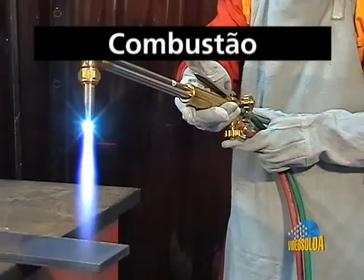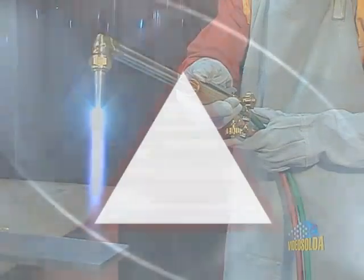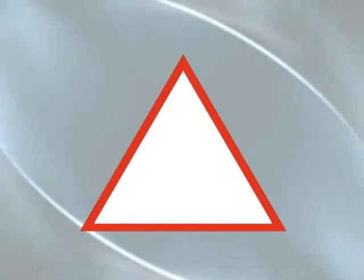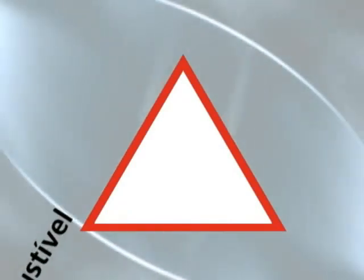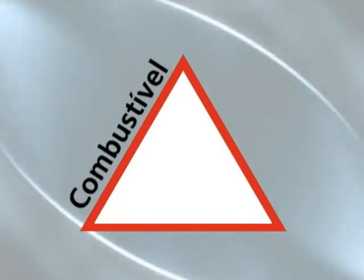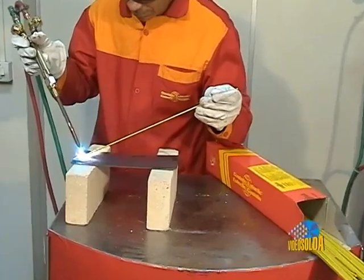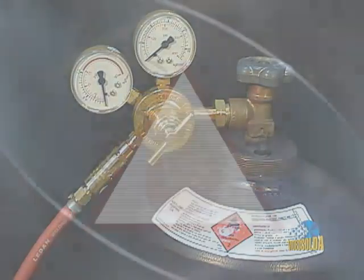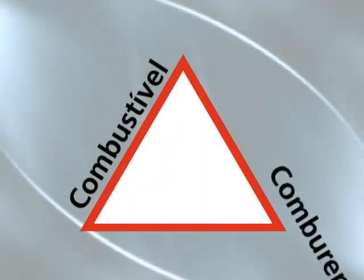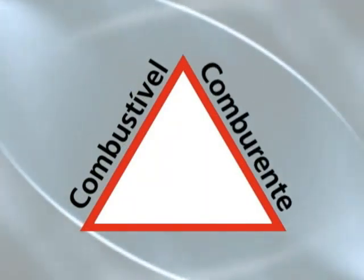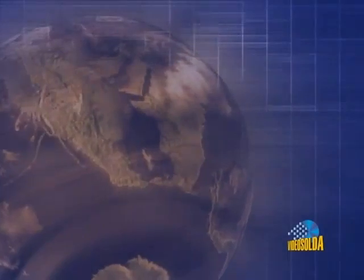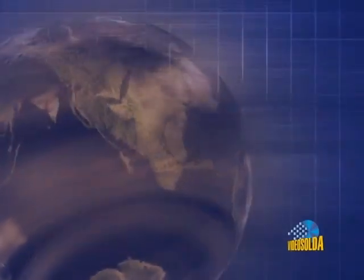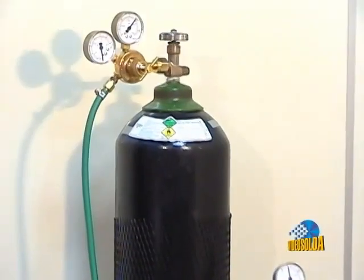Para uma combustão, é necessário reunir os três elementos que compõem o triângulo do fogo. O primeiro elemento é o combustível. Na soldagem, o gás normalmente utilizado é o acetileno. O segundo elemento é o comburente. No processo de solda e corte, o comburente mais utilizado é o oxigênio, presente no ar atmosférico e que pode ser fornecido no estado puro em cilindros.